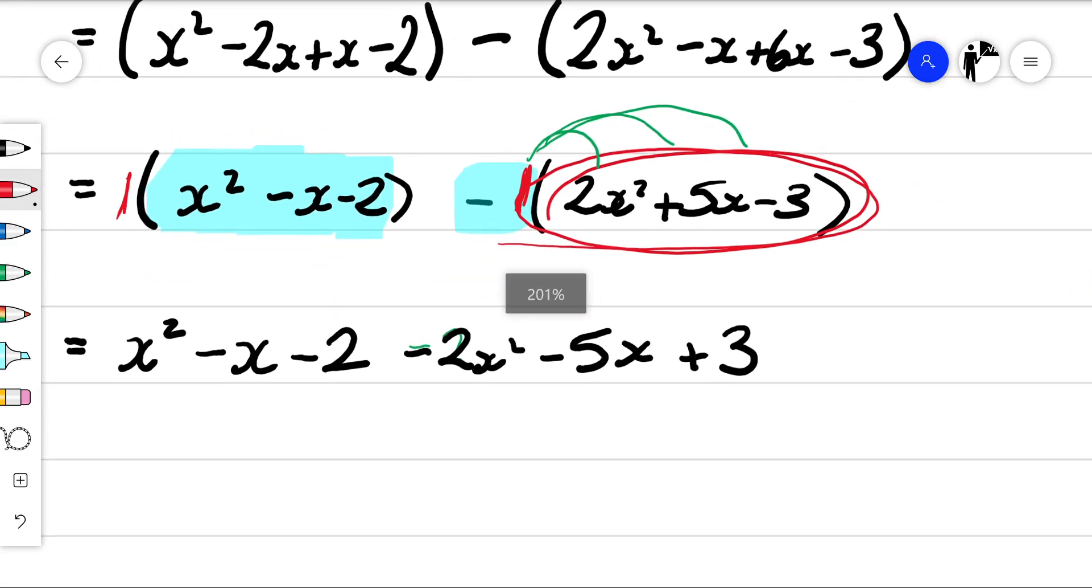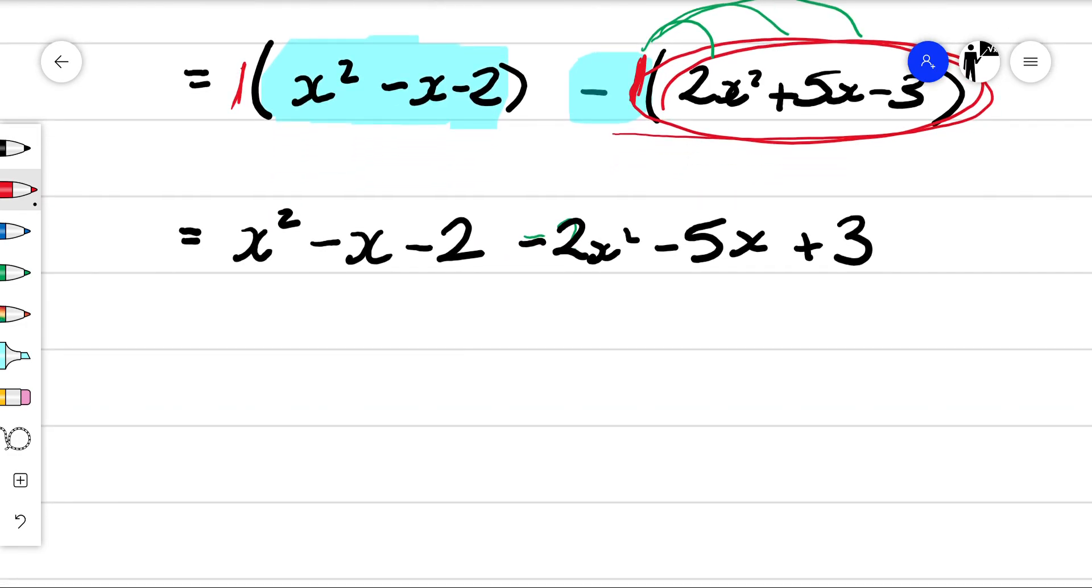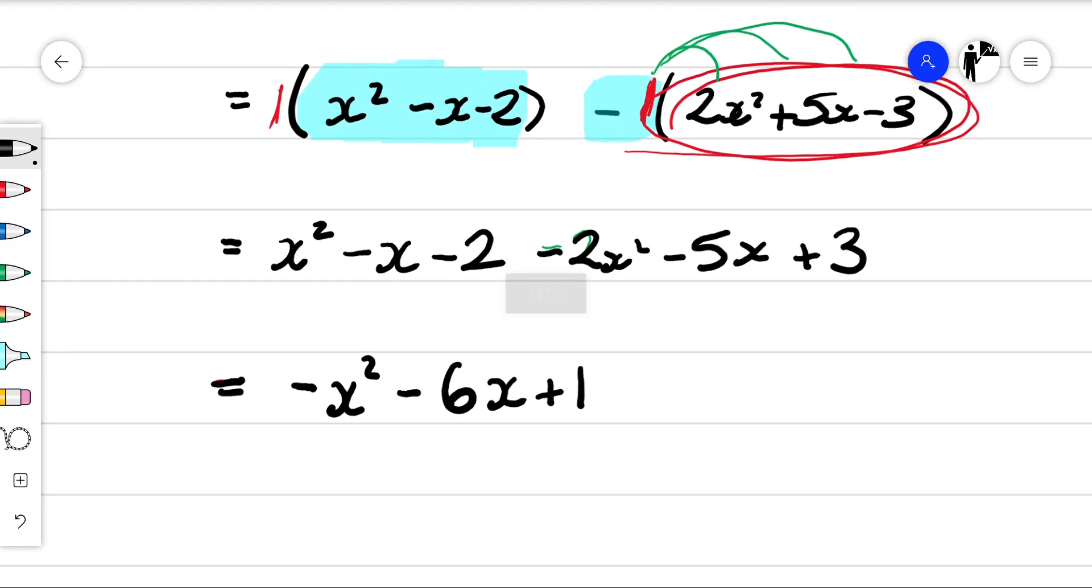Last thing. We just want to simplify here. We want to collect like terms. We get all of our x squared together, our x's together, and our numbers together. So we've got x squared take away 2x squared. That's minus 1x squared. We don't like the 1. We've got minus x minus 5x is minus 6x. And then we've got minus 2 plus 3. Minus 2 plus 3 is plus 1. And that would be us.